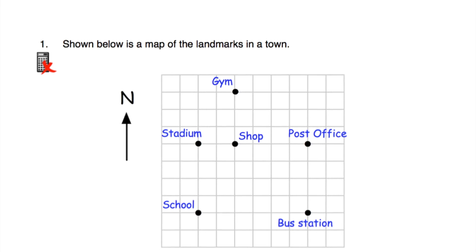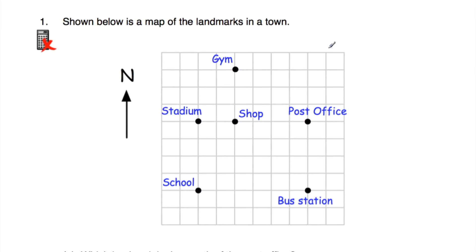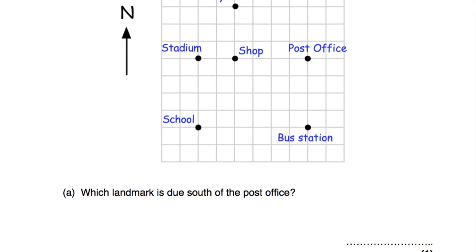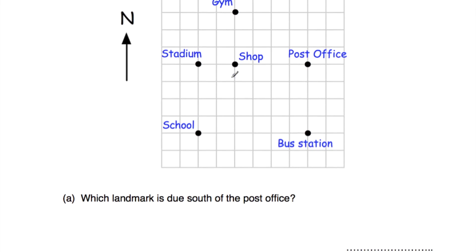Question number one: shown below is a map of the landmarks in a town. Part A says which landmark is due south of the post office. North is going up, so we've got north, east, south, and west — never eat shredded wheat, or however you remember it.